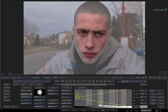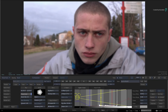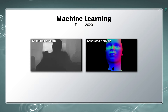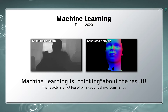Either way, the machine learning models play an integral part in getting these results. It is important to understand how Flame is creating these depth maps and normal maps, so let's take a moment to talk about this emerging technology. These results are not based on a defined list of commands, like removing a specific colour out of an image or tracking a visible pixel. Instead, the machine learning has to think about the image first, and then produce the depth map or normals map.